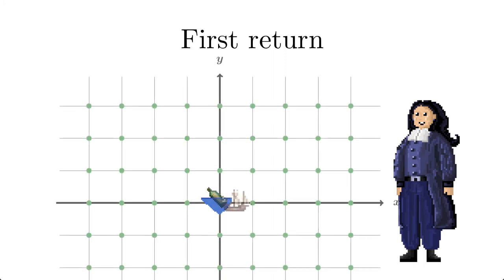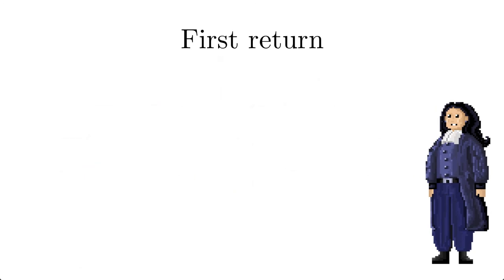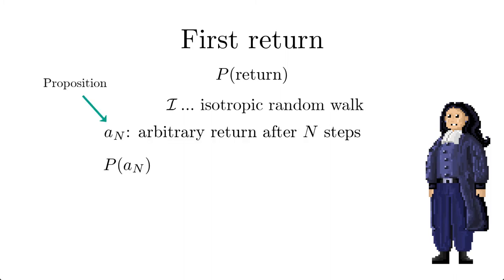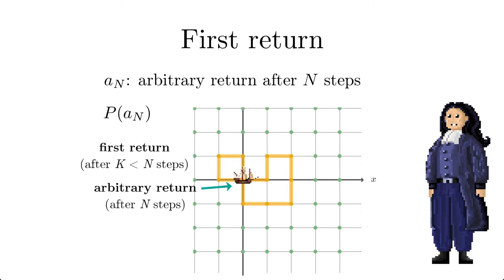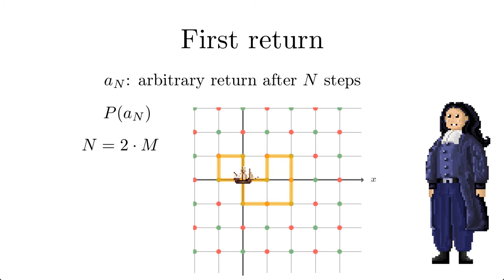Pascal raised the question whether they will ever see the bottle again that she put into the ocean. Assuming the ship is on a daily random course, the question concerns the probability that a random walk will return to its starting point. To answer this question we consider the probability that an isotropic random walk will return to its starting point after a certain number of steps. We introduce the following proposition and its probability of having an arbitrary return after n steps, which includes the possibility of having already seen the bottle in less than n steps. The return requires always an even number of steps, n equal to 2 times m. So we introduce the variable m.